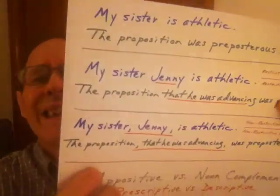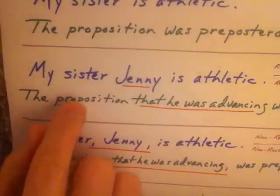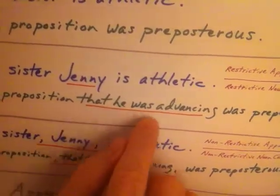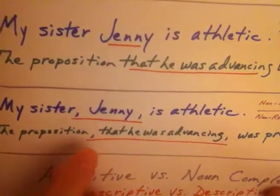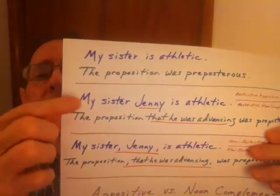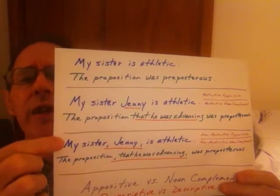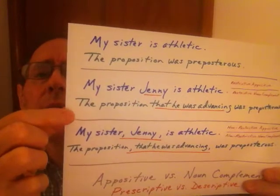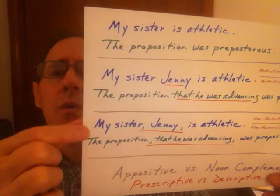You might say: I already know that — I watched your other videos. Well, the problem is this: appositive versus noun complement. In my initial videos, I referred to the clause without the commas as a noun complement, and the clause with commas as an appositive. You might say: Joey, the sister Jenny sentences show one kind of appositive and another kind of appositive — then what about the proposition sentences from previous videos? Why would they not be two different kinds of appositives?